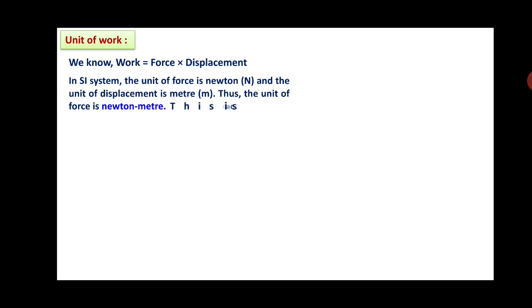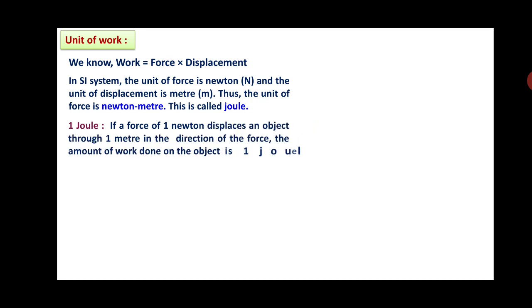What are the units of work? We know that work equals force into displacement. In SI system, the unit of force is Newton and the unit of displacement is meter. Thus, the unit of force will be Newton meter. This Newton meter is called a Joule. One Joule is defined as: if a force of 1 Newton displaces an object through 1 meter in the direction of the force, the amount of work done on the object is said to be 1 Joule. Therefore, 1 J = 1 N × 1 m.